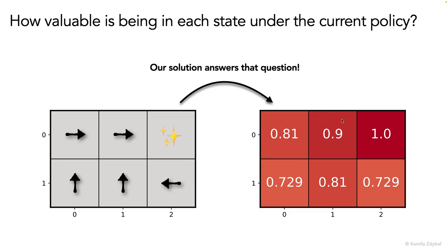For example, this state is pretty valuable, and it's understandable because it's just one hop away from receiving the plus one reward. On the other hand, this state is less valuable, even though it's directly below the state that rewards the agent. The reason for this is that under the current policy, this state is actually three hops away from the terminal state, so it's less valuable — and it's even less valuable than this state.